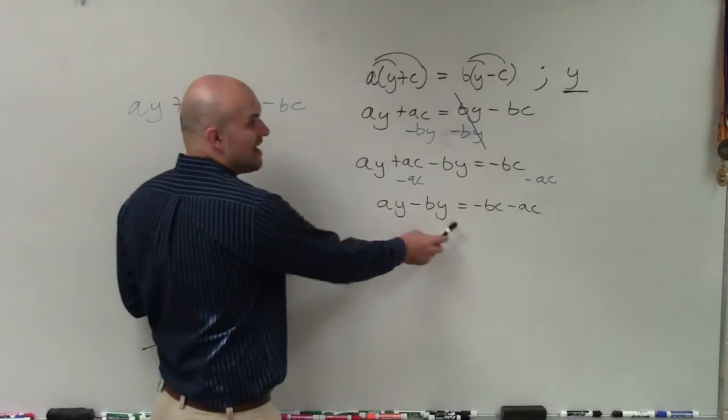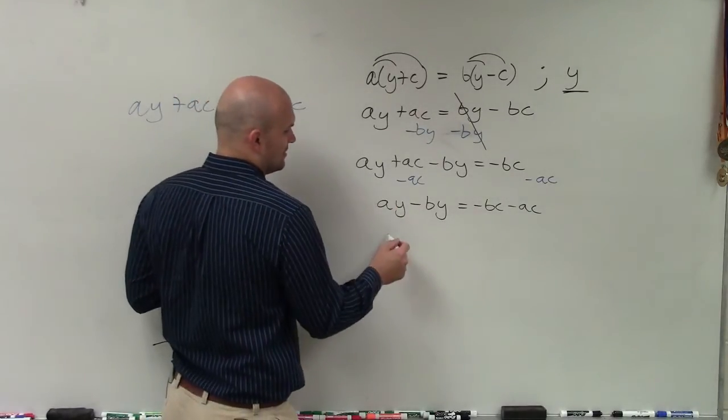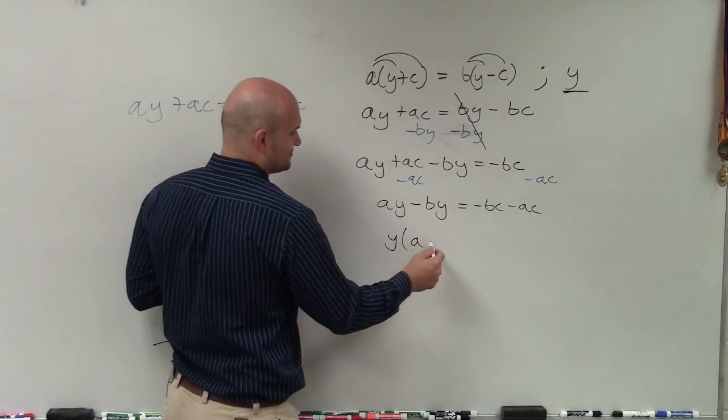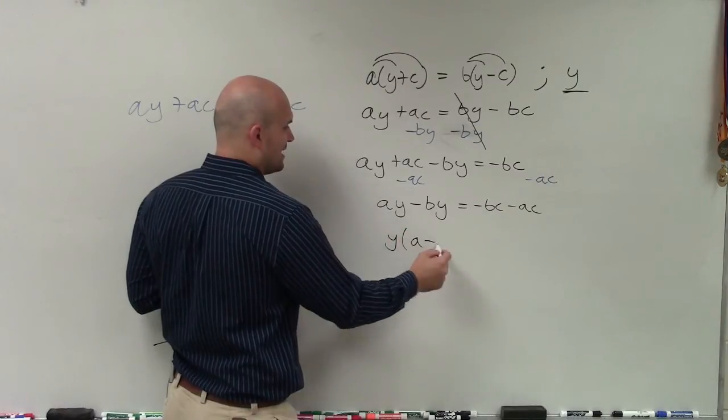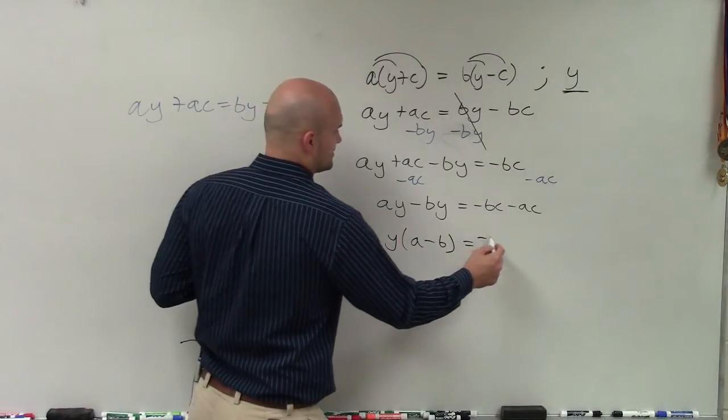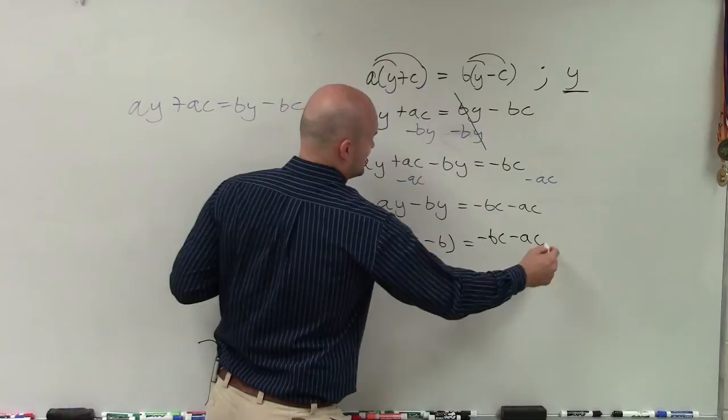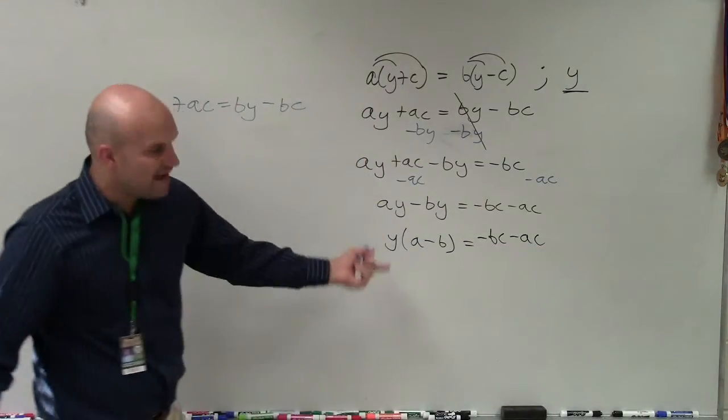But the way to get this to be one variable is I can factor this out. If you guys remember, you're factoring: y(a minus b) equals negative bc minus ac. So I can factor that out.